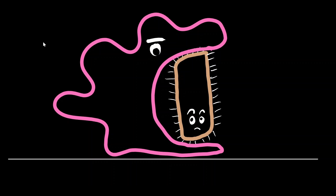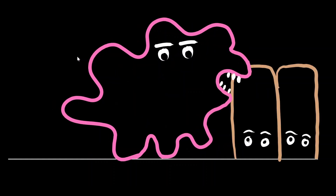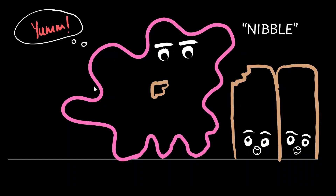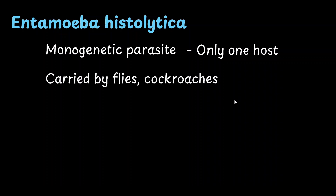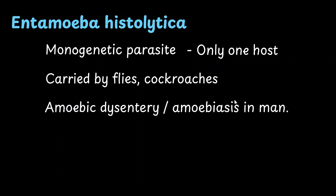Are you familiar with the process of phagocytosis? It is the process by which cells such as amoeba engulf food whole. But some organisms are capable of nibbling through cells. In today's video, we are going to look at one such organism that nibbles through cells: Entamoeba histolytica. This is a monogenetic parasite, meaning it infests only one host, and it is carried by mechanical vectors like flies and cockroaches. It causes amoebic dysentery or amoebiasis in humans.